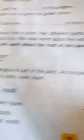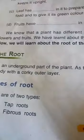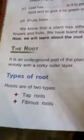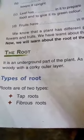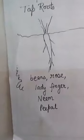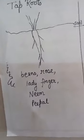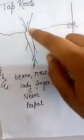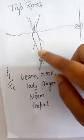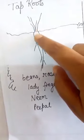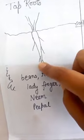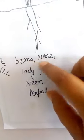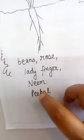A root is an underground part of the plant. As the plant grows, its root becomes thick and woody with a corky outer layer. There are two types: taproot and fibrous root. A taproot is a single long root with thin roots arising from it — it can be thin or thick. Plants that have taproots include beans, rose, ladyfinger, neem, and peepal.